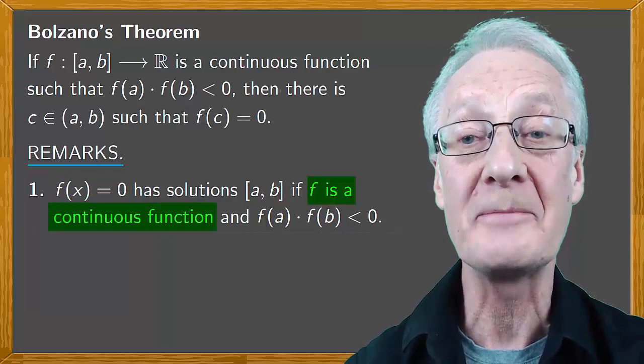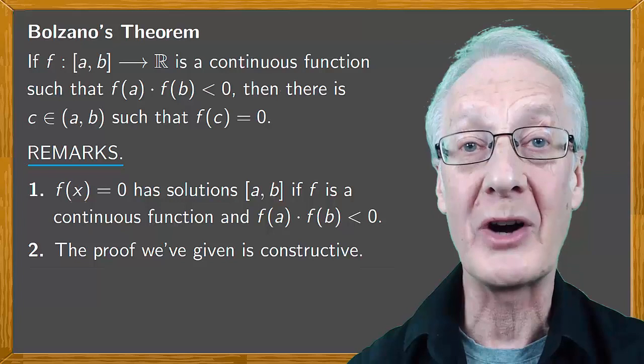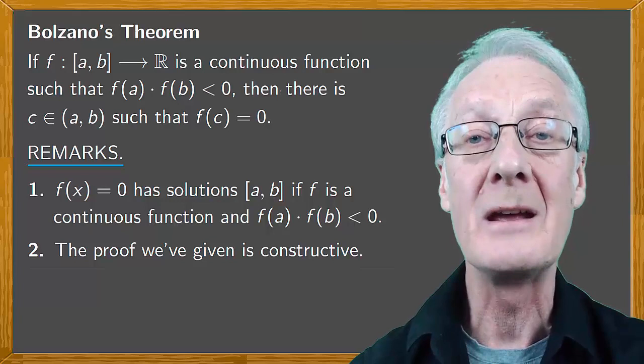Moreover the proof we've given is constructive. By repeating the method we've described here for each equation with the conditions corresponding to the hypotheses of Bolzano's theorem, we can obtain approximations of a solution of a given equation. This method is known as the bisection method.